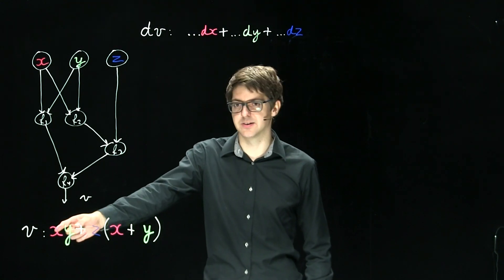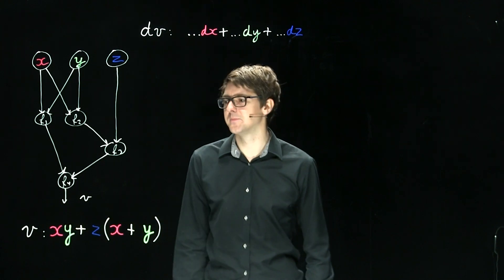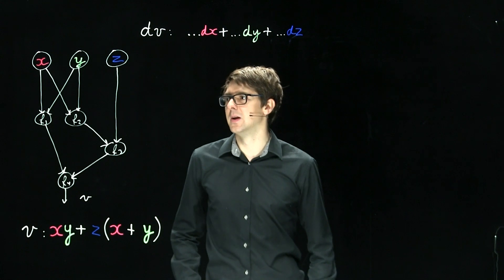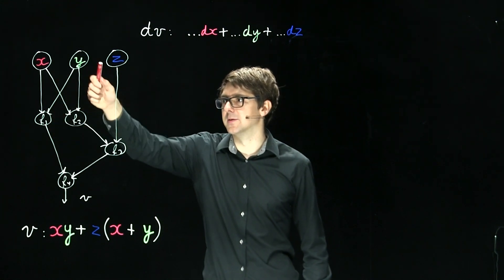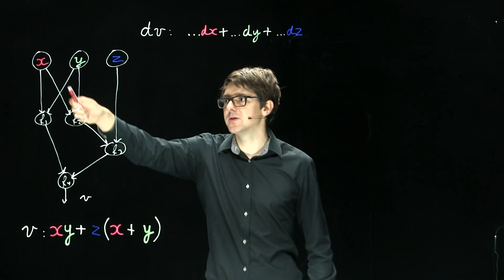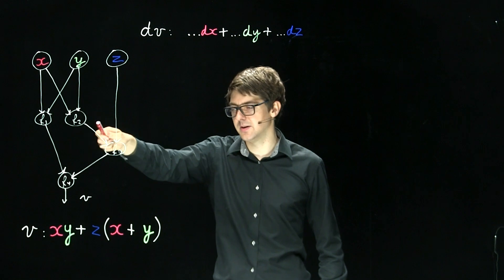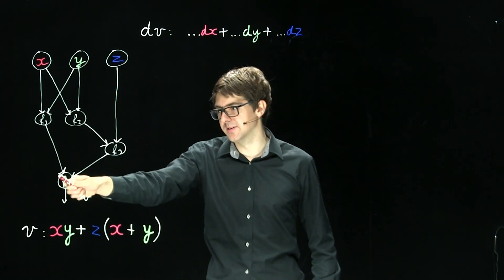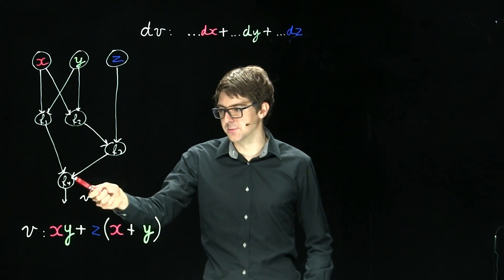This is a simple scalar expression that depends on inputs x, y and z. You could represent this computation in a graph as follows, where this node would mean the multiplication of x and y, here would be the addition of x and y, here multiplication of this sub-expression with the z variable and an addition for the last node.